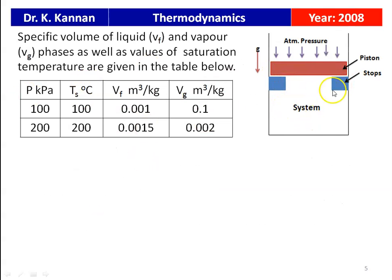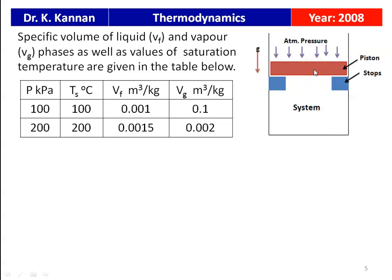The heat transfer to the system is 1 kilojoule, during which the entropy increases by 10 joules per Kelvin. In the arrangement, the stops and the system with pure substance are shown; atmospheric pressure acts downward along with the weight of the piston, and the upward system pressure. The specific volumes Vf and Vg at 100 kPa/100°C and 200 kPa/200°C are given from the steam tables.